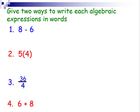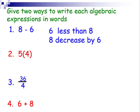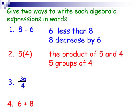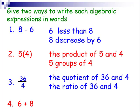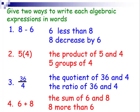In this case, give two ways to write an algebraic expression in words. You may want to pause. Your ways may not be the same as the way I have because there's lots of different ways, as we notice of all the different words we can use that would mean addition, subtraction, multiplication, and division. I chose to write it as six less than eight, as well as eight decreased by six. The next one, the product of five and four, or five groups of four. The quotient of 36 and four, or the ratio of 36 and four. The sum of six and eight, or eight more than six.